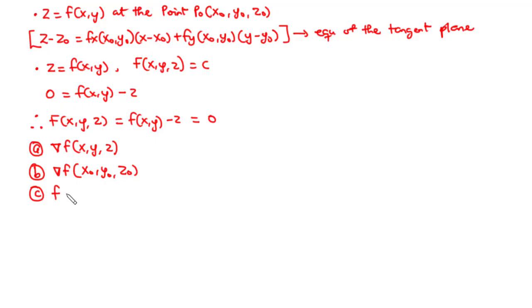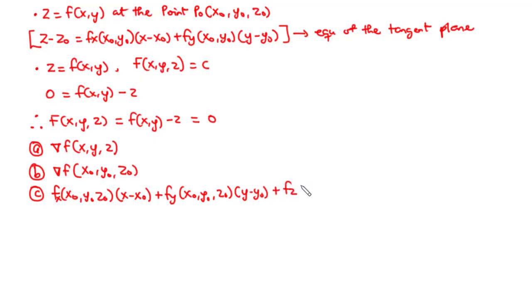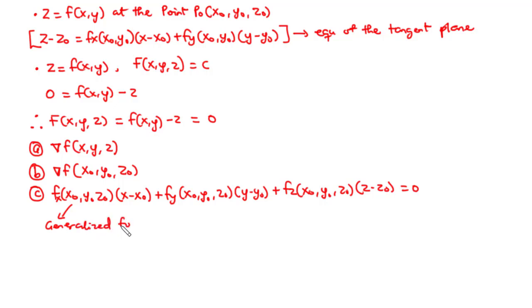This time, the generalized form of the tangent plane equation is given by: Fx of x0, y0, z0 times x minus x0, plus Fy of x0, y0, z0 times y minus y0, plus Fz of x0, y0, z0 times z minus z0, equals 0. This is the generalized form of the tangent plane equation.